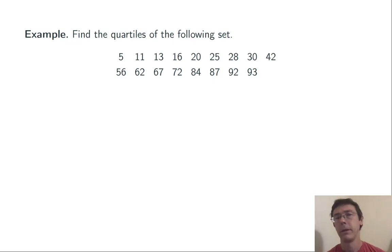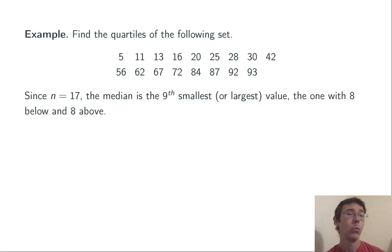Let's do an example. Find the quartiles of the following set. So we have 17 values here. When they're ordered from lowest to highest, the median is going to be the one in the middle, that is, the ninth value. This is going to have eight values smaller and eight values larger. So the median, our second quartile, is 42.